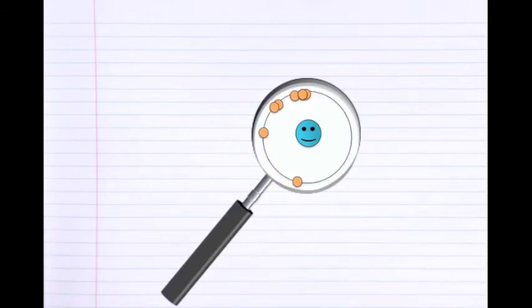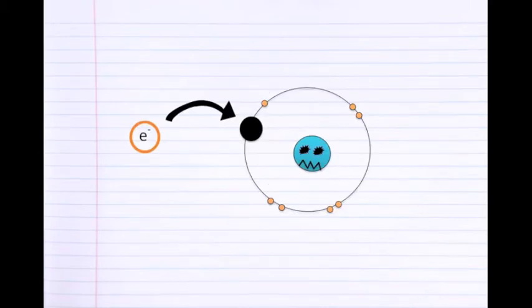Molecules are comprised of atoms, which are made up of protons, neutrons, and a cloud of electrons. When a single molecule loses one of its electrons, it may become unstable.